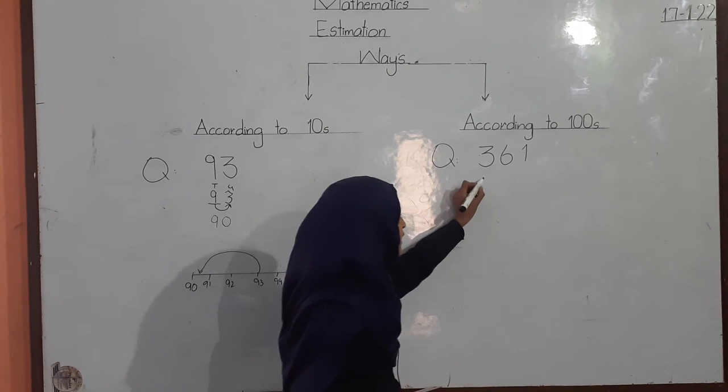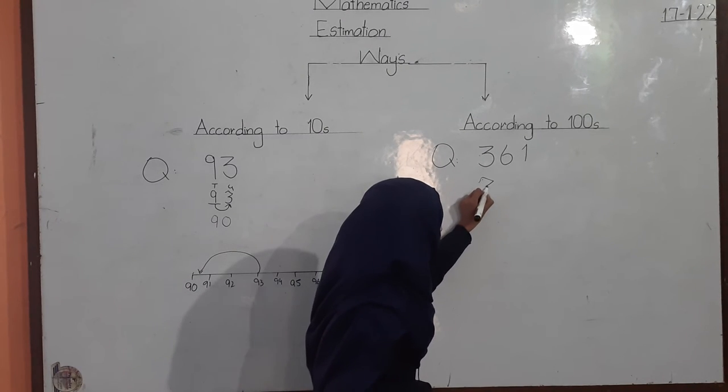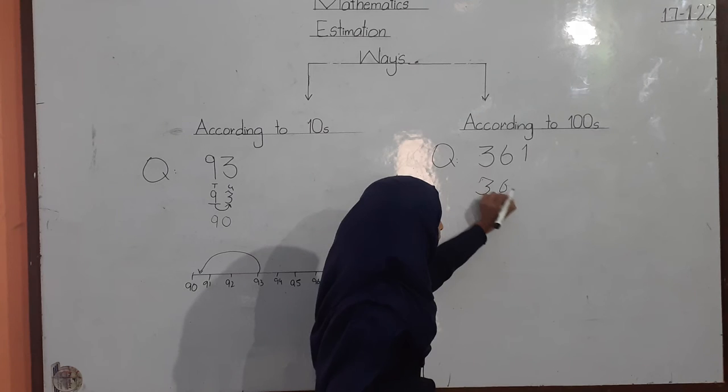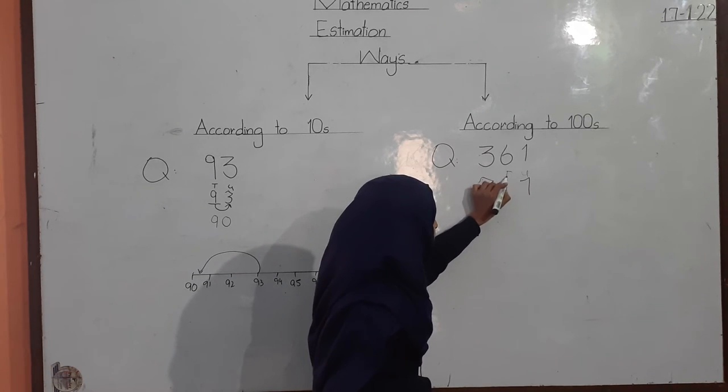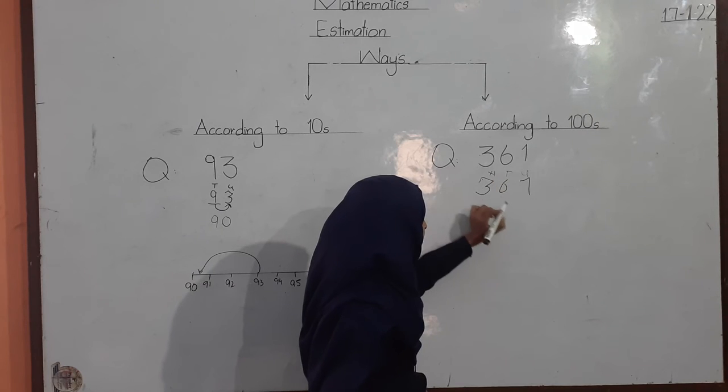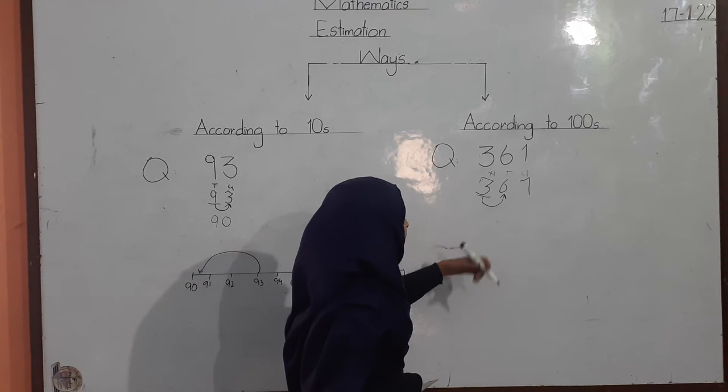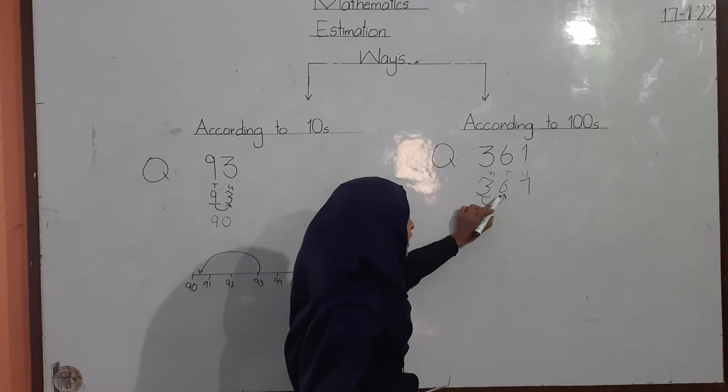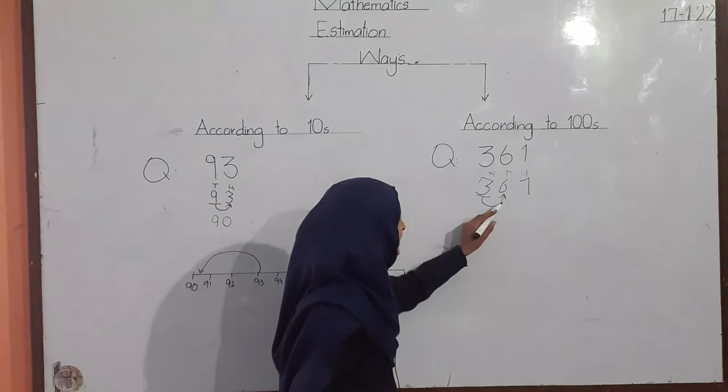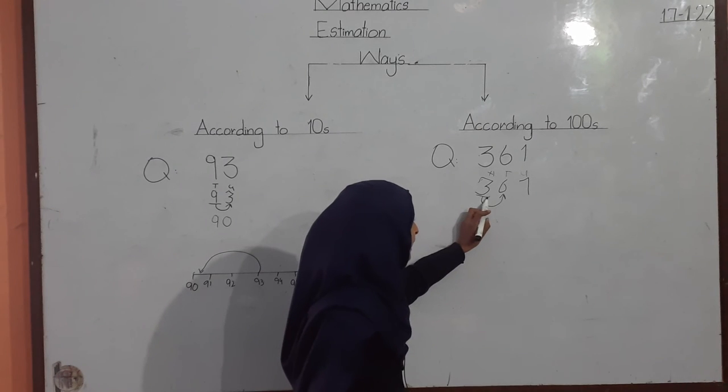Number one: question write. Number two: place value write. Number three: underline. Number four: arrow lagana. Number five: less than five or greater than five. If it is greater than five, we will add here. It will be four and here we will put zero.